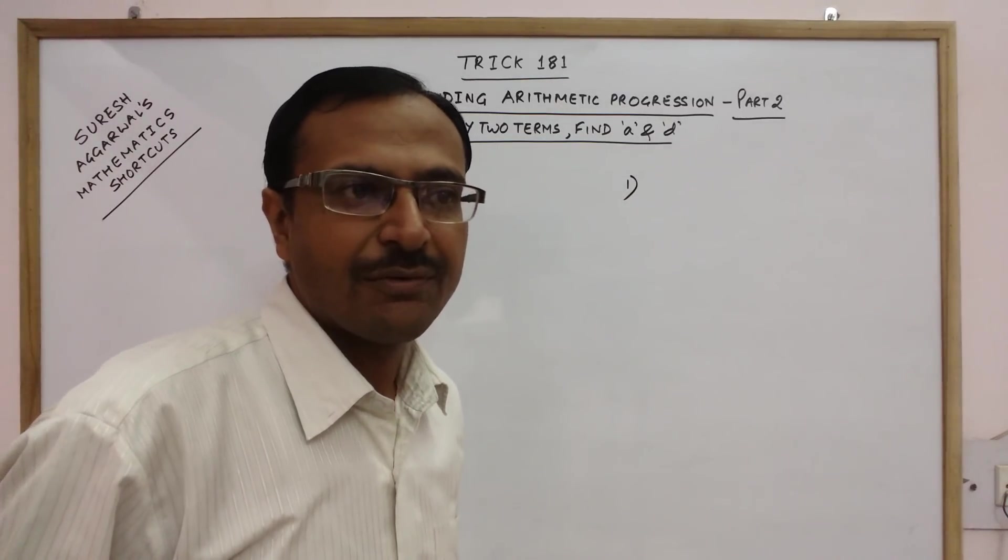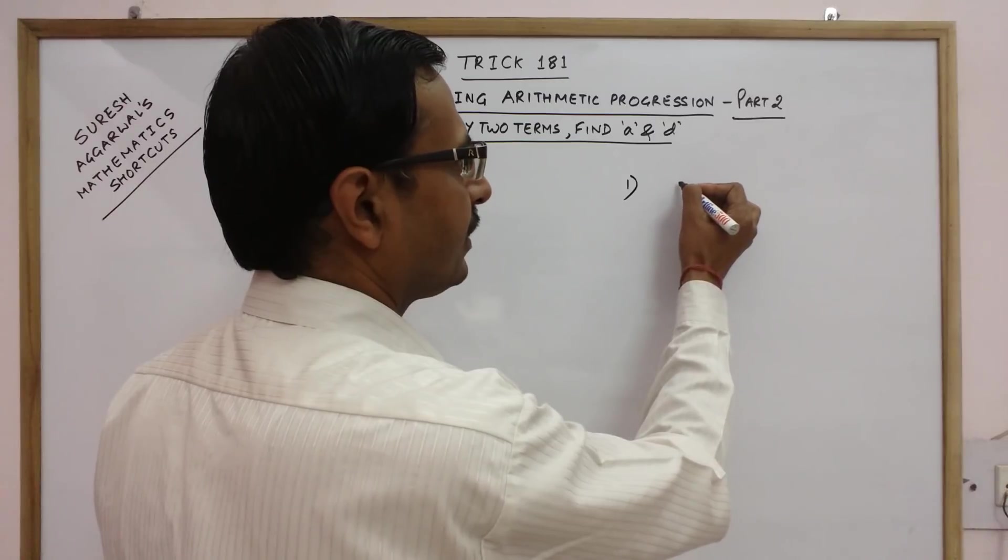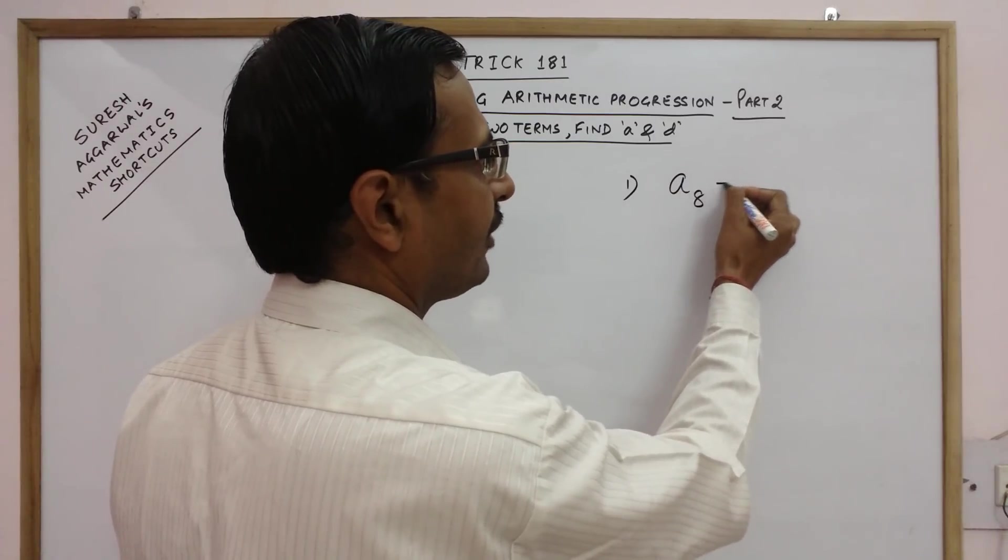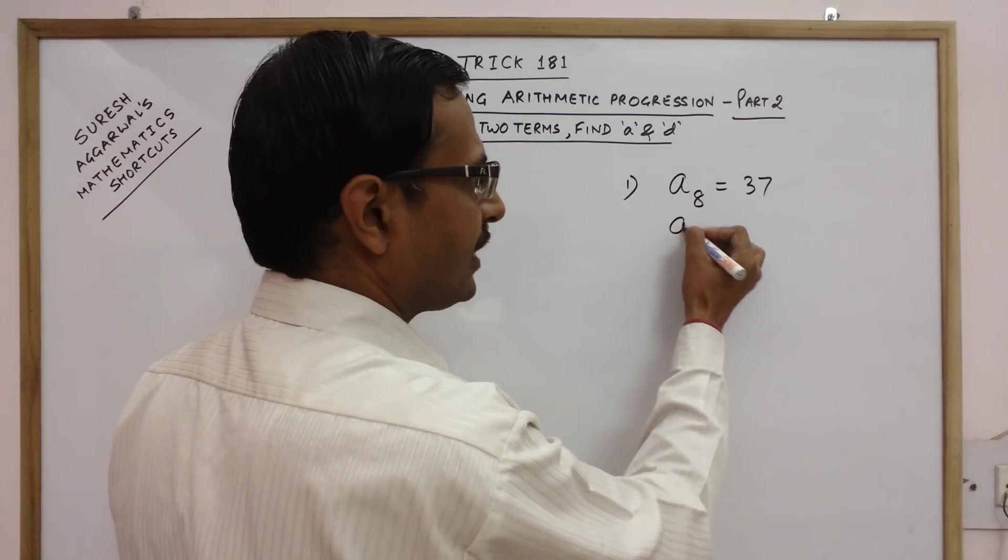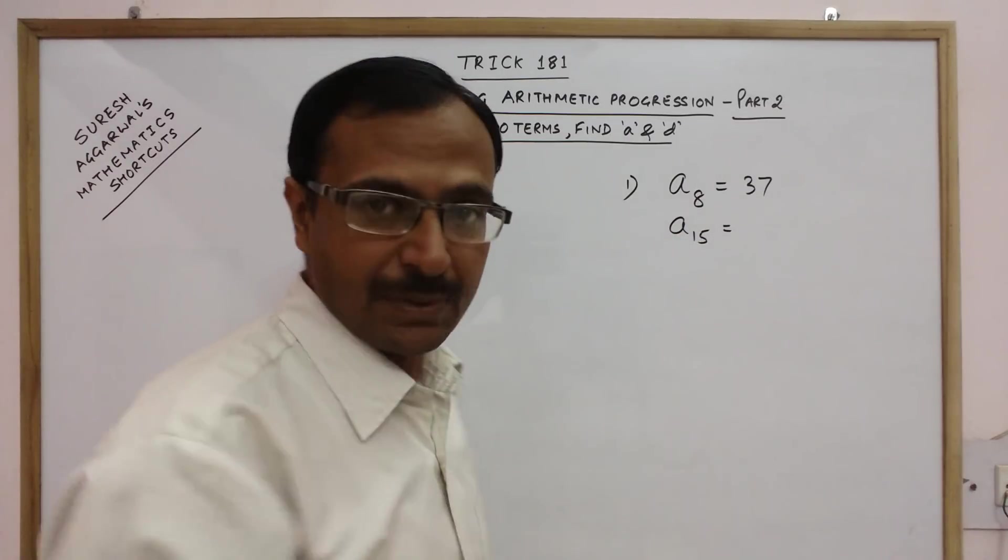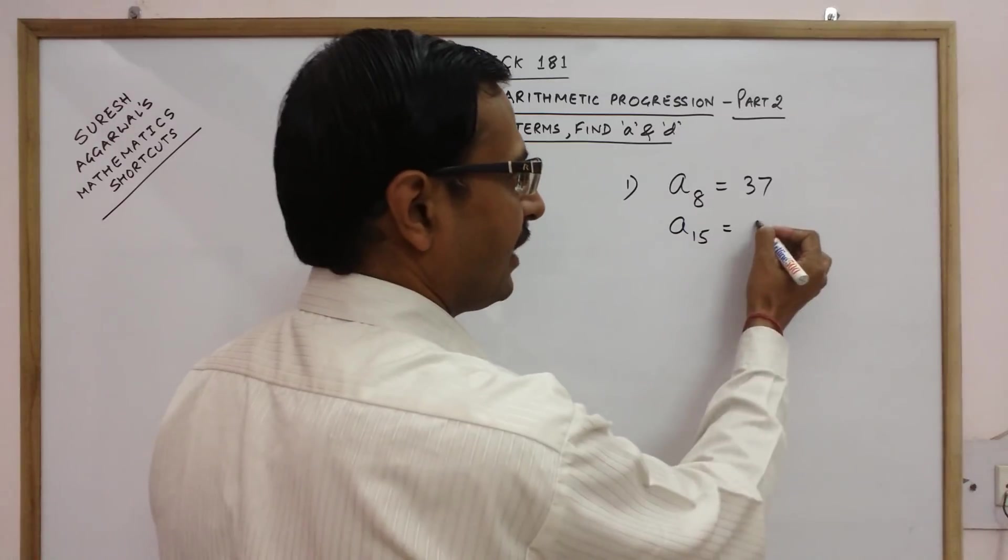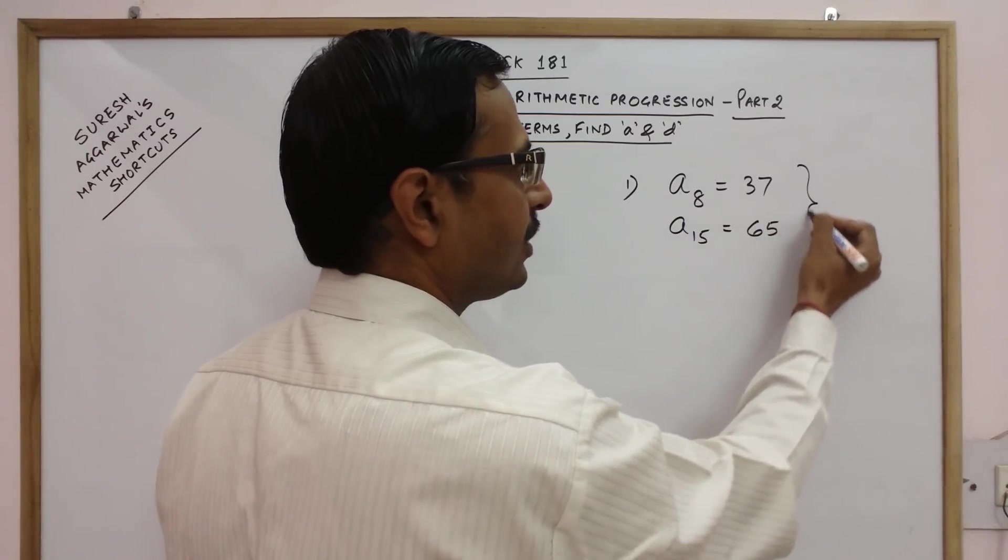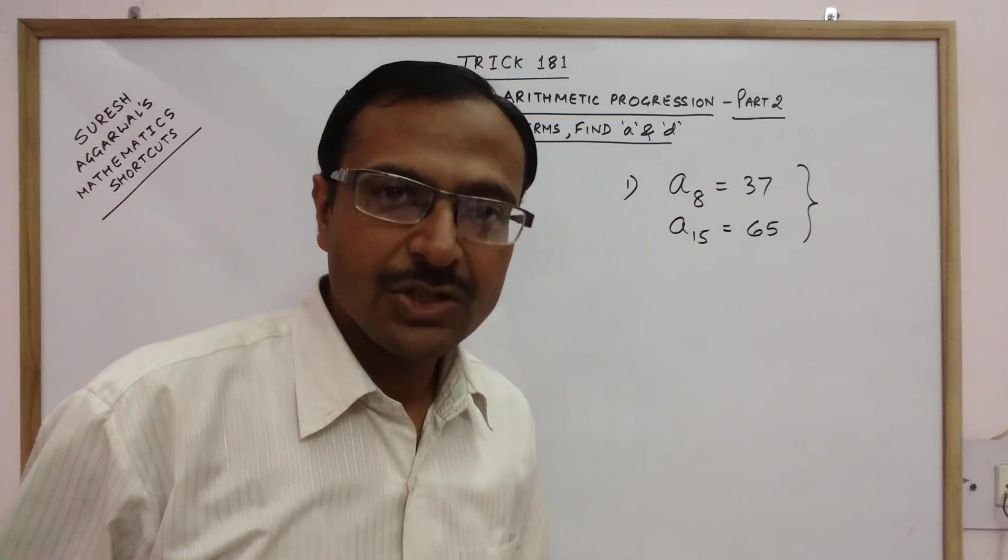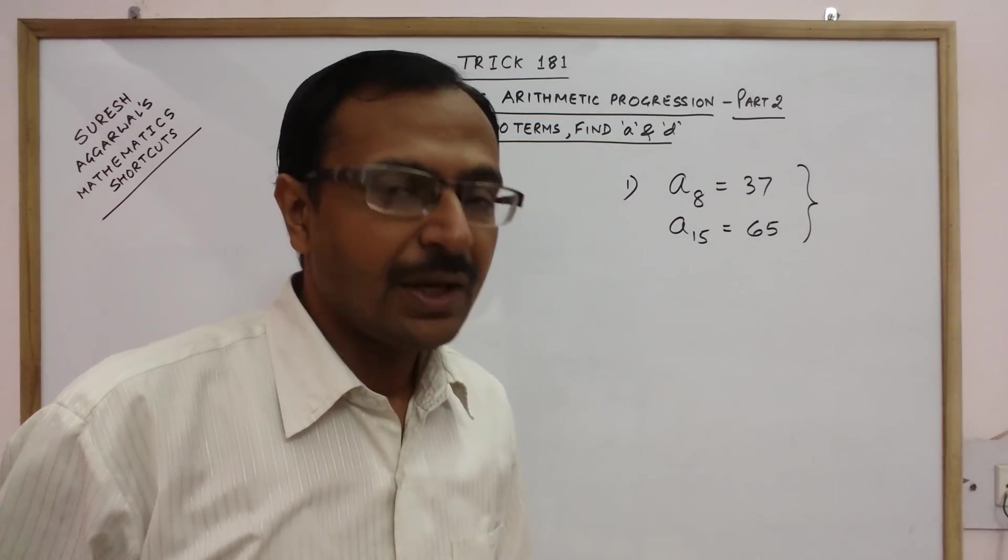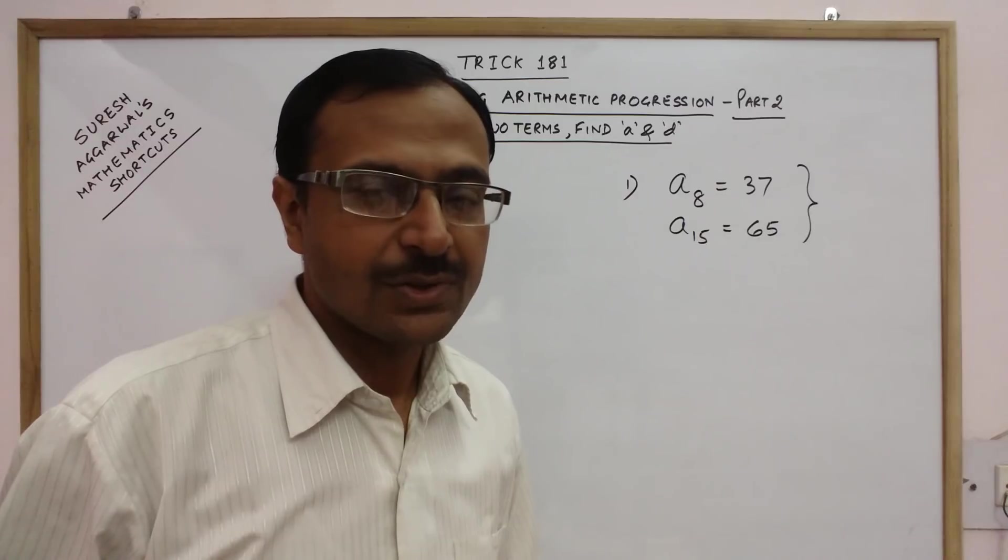Suppose we are given that the 8th term of an AP is 37 and the 15th term of the same AP is 65. Now these are the two terms which are given to us and we need to find the first term and the common difference of the AP.